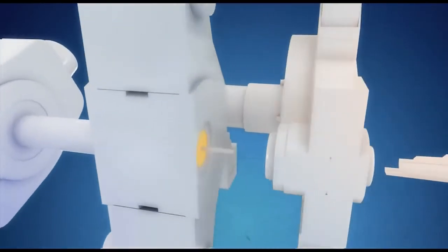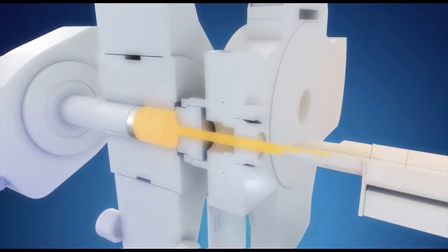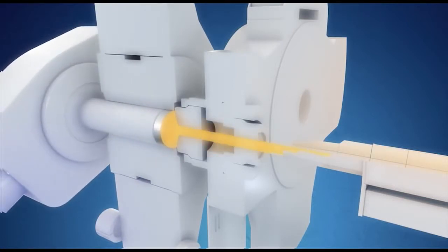A mandrel is inserted into the hole in the billet. When extrusion begins, the billet is pressed out between the die and the mandrel of the mill.